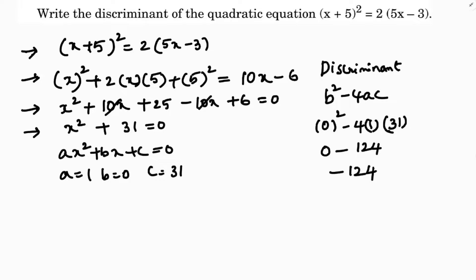They didn't ask for the nature of the roots, but since the discriminant is less than 0, the roots are not real. The answer here is discriminant = −124.